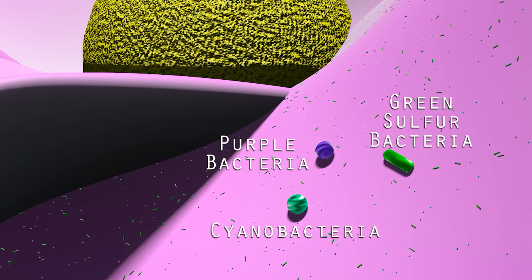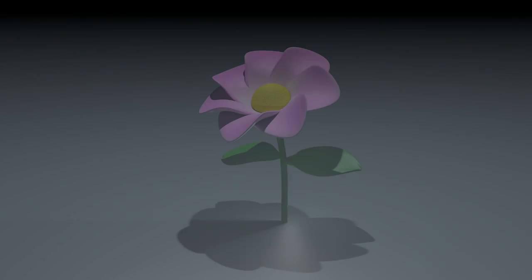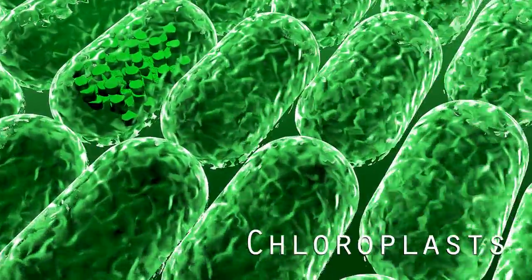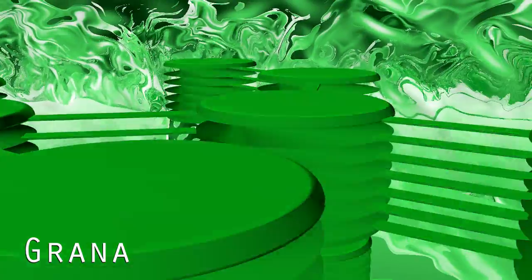Each of these organisms has evolved distinct cellular structures to perform photosynthesis. Plant cells contain chloroplasts as their photosynthetic organelles. These chloroplasts contain stacks of thylakoids, photosynthetic discs, organized into grana.